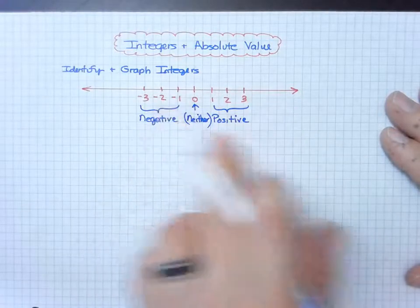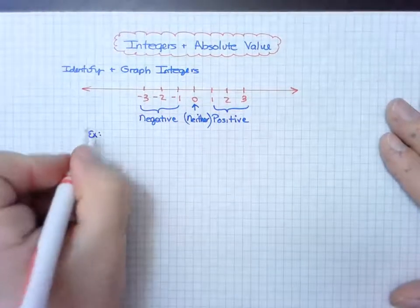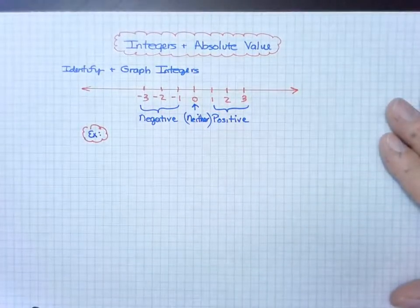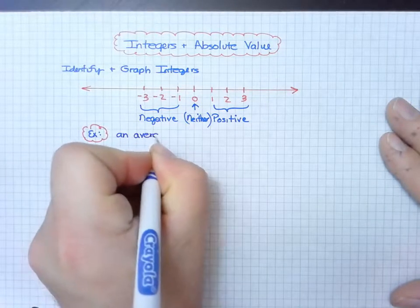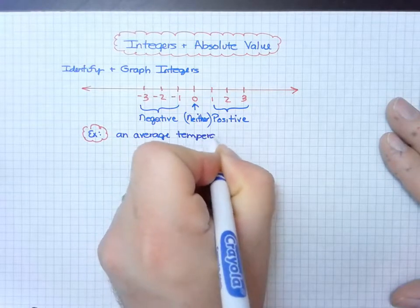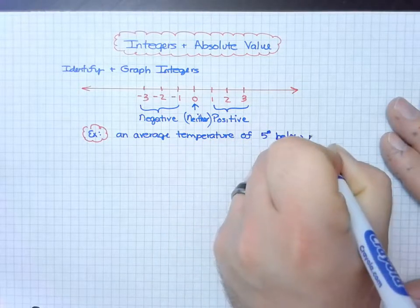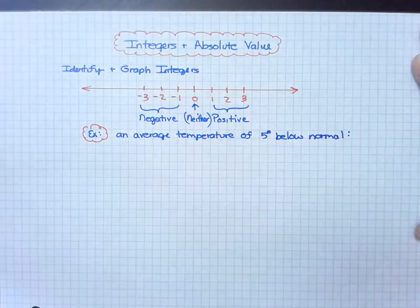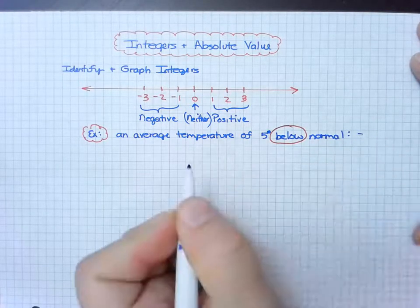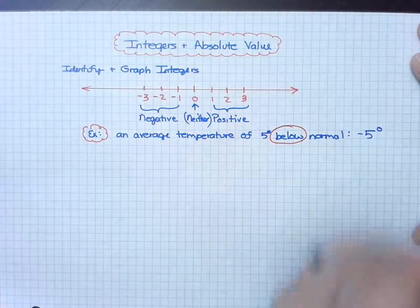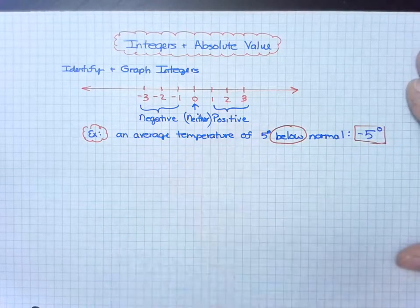We'd like to take some real-world examples of how we can use negative numbers in the real world. For example, an average temperature of five degrees below normal. There's a keyword there that I like to highlight, and that's 'below.' Therefore, I would use a negative symbol along with my five degrees. That's how I can express this contextual situation with a negative number.